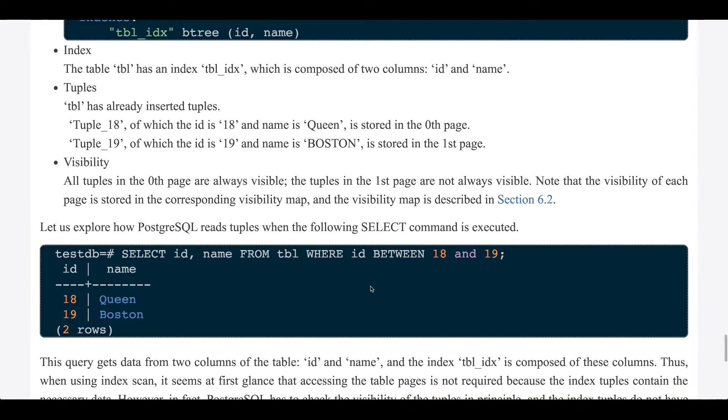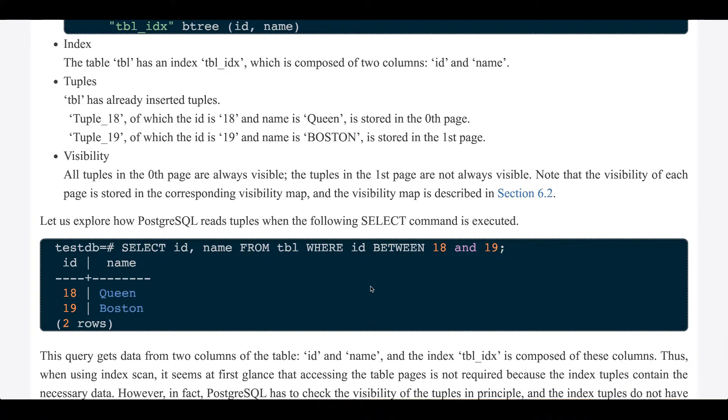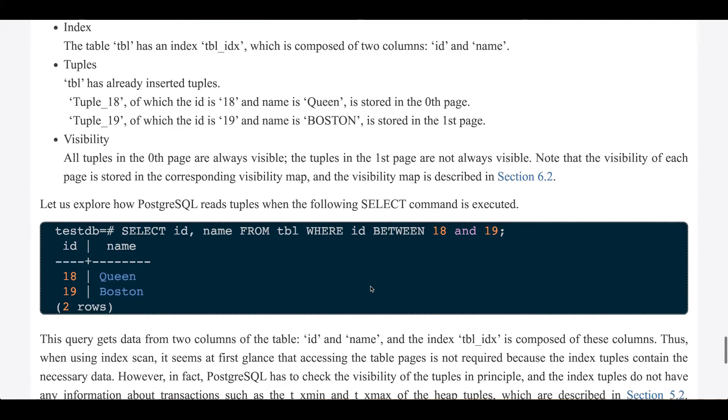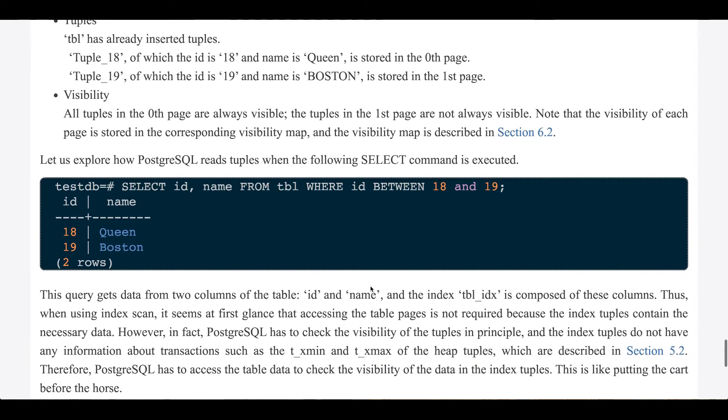Visibility: All tuples in the page at index 0 are always visible. The tuples in the page at index 1 are not always visible. Note the visibility of each page is stored in the corresponding visibility map, and the visibility map is described in section 6.2.